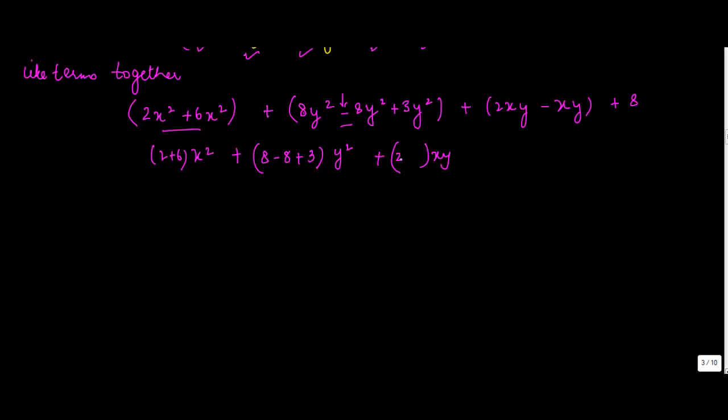Minus x² represents what? Minus 1xy, minus 1, plus 8. So 2 + 6 is 8x², plus 8 - 8 = 0, plus 3 = 3y², plus 2 - 1 = 1xy, plus 8, and this is your answer. So that's how basically you do the addition for algebraic expressions.